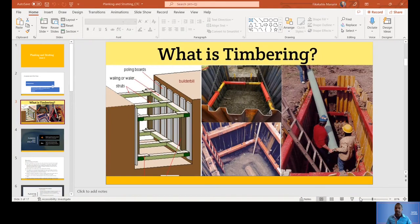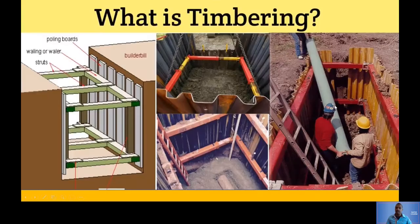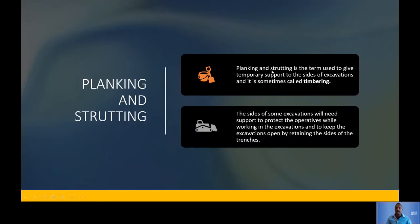As you can see, modern timbering uses different materials from timber. Planking and strutting is the term used to give temporal support to the sides of an excavation, as demonstrated in the previous pictures. When timbering is not there, the excavation can just fall inward, so it needs support to stay upright.